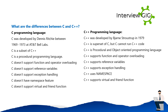What are the differences between C and C++? C was developed by Dennis Ritchie between 1969-1973 at AT&T Bell Labs. C is a subset of C++ and a procedural programming language. C doesn't support function and operator overloading, reference variables, exception handling, namespace feature, or virtual and friend functions.